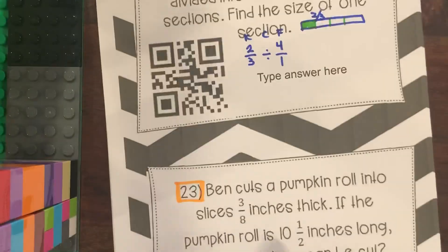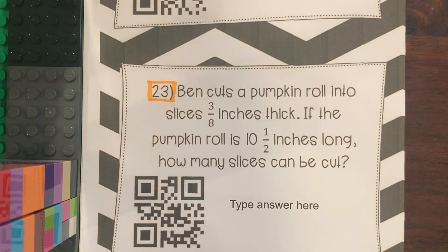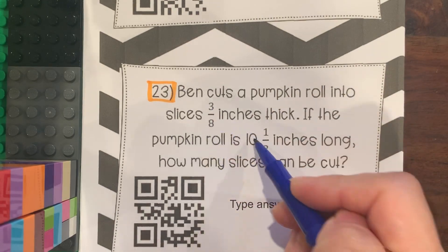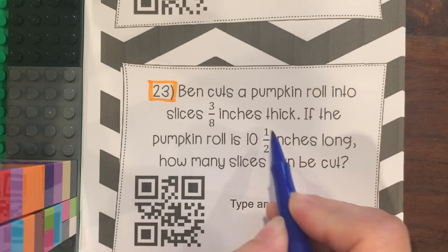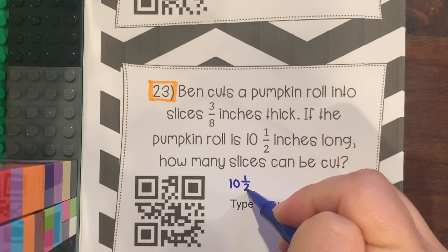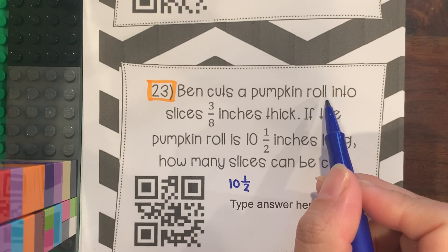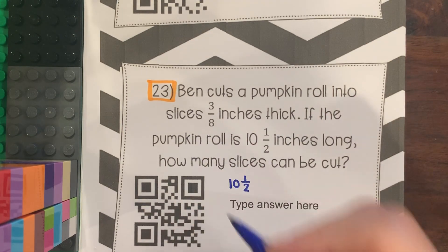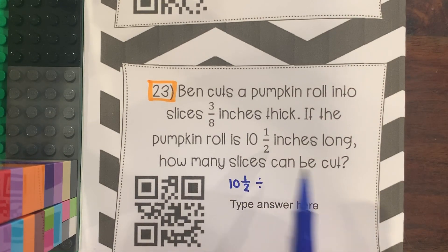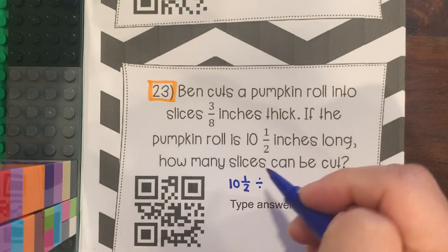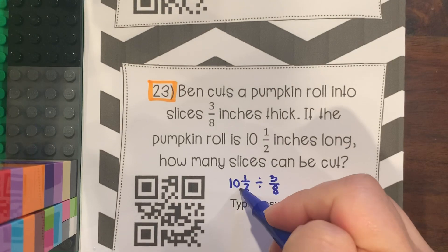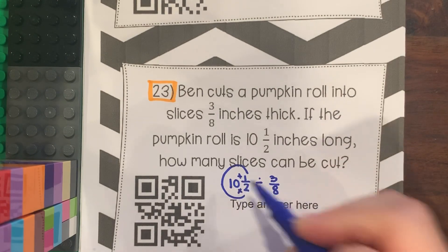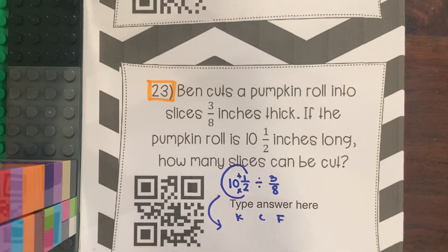Number 23: Ben cuts a pumpkin roll into slices that are 3/8 inches thick. If the pumpkin roll is 10 and a half inches long, how many slices can be cut? Do not do 3/8 divided by 10 and a half. The pumpkin roll you have is 10 and a half, and you want to cut it into slices that are 3/8 inches thick. So take 10 and a half divided by 3/8. Don't forget to do around the world, and then KCF.